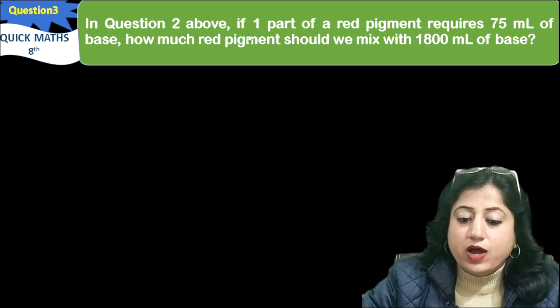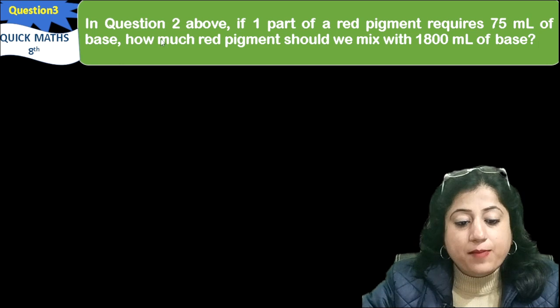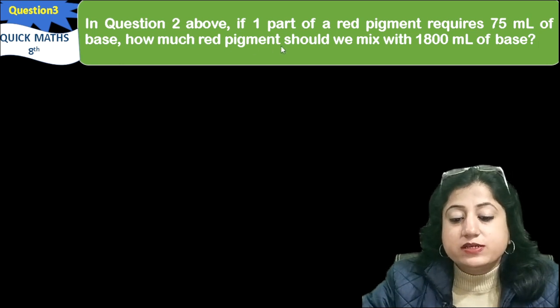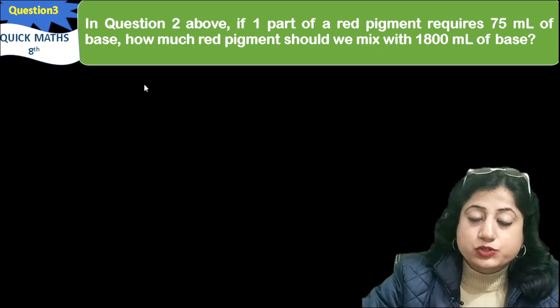In question 2 above, if one part of red pigment requires 75 ml of base, how much red pigment should we mix with 1800 ml of base? We will form the table from the second question.